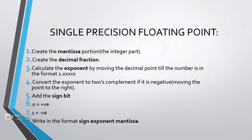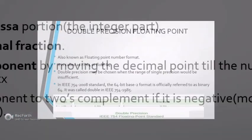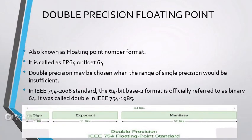If the exponent is negative, move the point to the right. Fifth point: add the sign bit. Sixth point: if zero, then it is positive, and if one, then it is negative. Last point: write the format — sign, exponent, and mantissa.